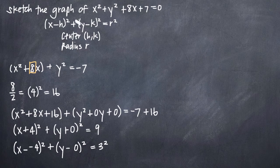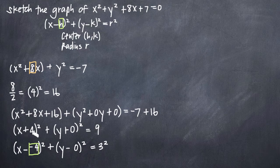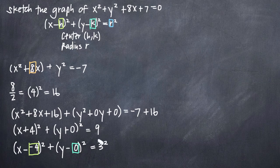We can now identify the different pieces of our formula. In the standard form we have a value for h, and in our equation h equals negative 4. If we had left this as x plus 4 without rewriting, we'd need to remember the standard form has a minus sign and correctly identify h as negative 4, not positive 4. By rewriting as x minus negative 4, we ensure the correct sign. We also identify k equals 0 and r equals 3. Knowing h, k, and r, we can find the center and radius and sketch the circle.